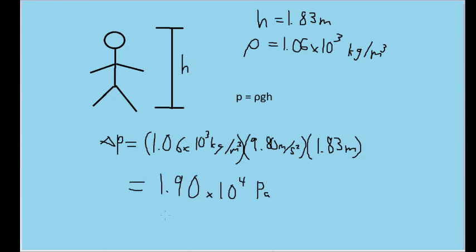Plugging all of this into our calculators and rounding to the proper number of significant figures, we get a blood pressure difference of 1.90 times 10 to the fourth power of pascals.